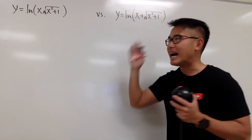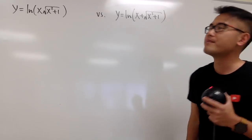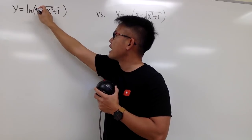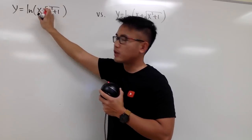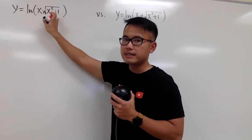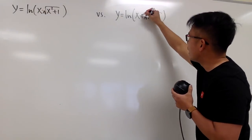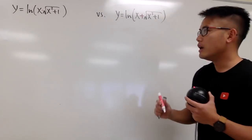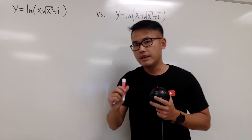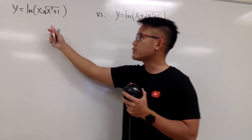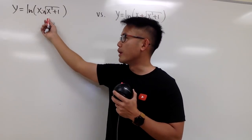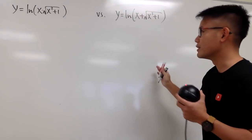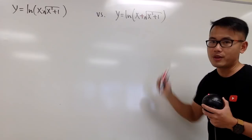Notice how similar these two are. You see that the first one has x times square root of x squared plus 1, but here we have the plus in between instead. In fact, we can actually use the log property to break the first one down. Unfortunately, we cannot do the same thing for the second one, though.